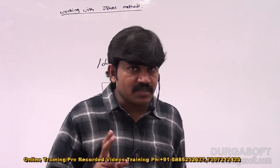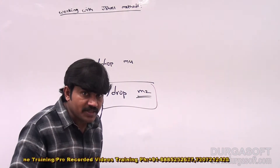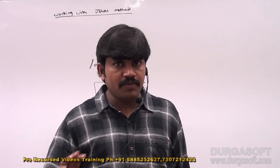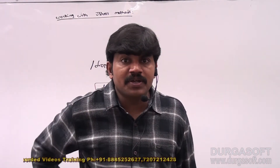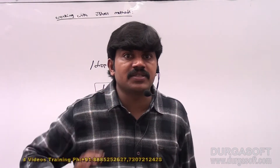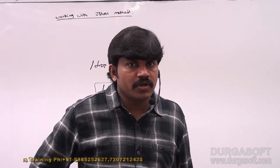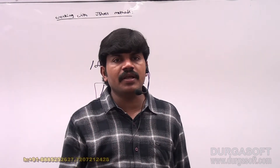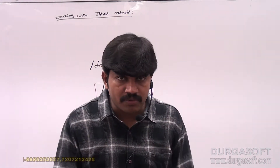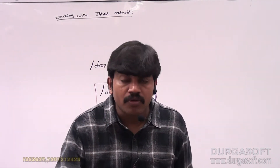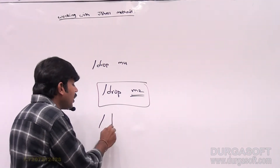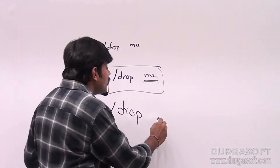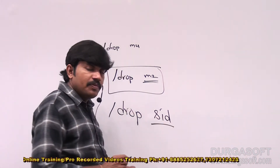There are two m2 methods and I'm using slash drop m2. Which method will be dropped — the first, the second, both, or will we get an error in JShell? The answer is we're going to get an ambiguity error. How can we handle this scenario? We drop by snippet ID. Every coding snippet has an ID — provide that snippet ID and that particular method will be dropped.